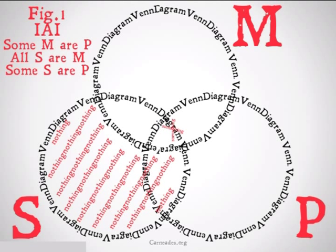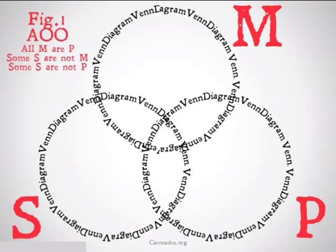Then we'll look at our conclusion, Some S are P. This could possibly be true if that X fell into the center, but the X could also fall into the side that only has M and P. So, because we can't be sure, we're going to call this an invalid argument.